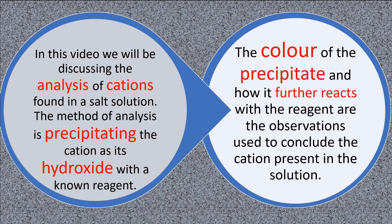In this video, we will be discussing the analysis of cations found in solution. The method of analysis is precipitating the cation as its hydroxide with a reagent. The color of the precipitate and how it further reacts with the reagent are the observations used to conclude the cation present in the solution.